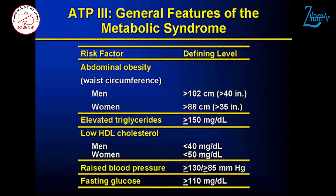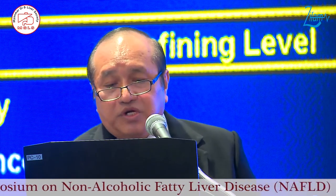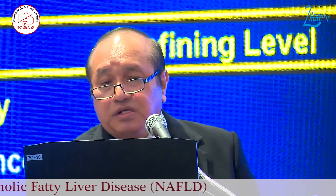As Professor Wanai said, obesity and insulin resistance lead to metabolic syndrome. People can be termed as having metabolic syndrome when they have abdominal obesity with a waist circumference of 102 centimeters for men and 88 centimeters for women, or elevated triglycerides, low HDL, high blood pressure, and hyperglycemia. When they fulfill this criteria, they can be labeled as metabolic syndrome.